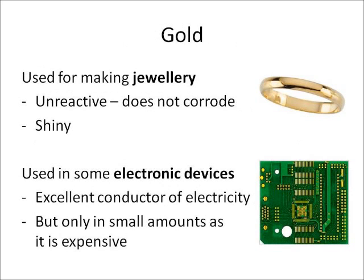You need to know about four different metals and their properties. Number one is gold. Gold is used for making jewellery because it's unreactive, it does not corrode, and it's shiny. It's also used in some electronic devices because it's an excellent conductor of electricity, but only a small amount is used because it's very expensive.